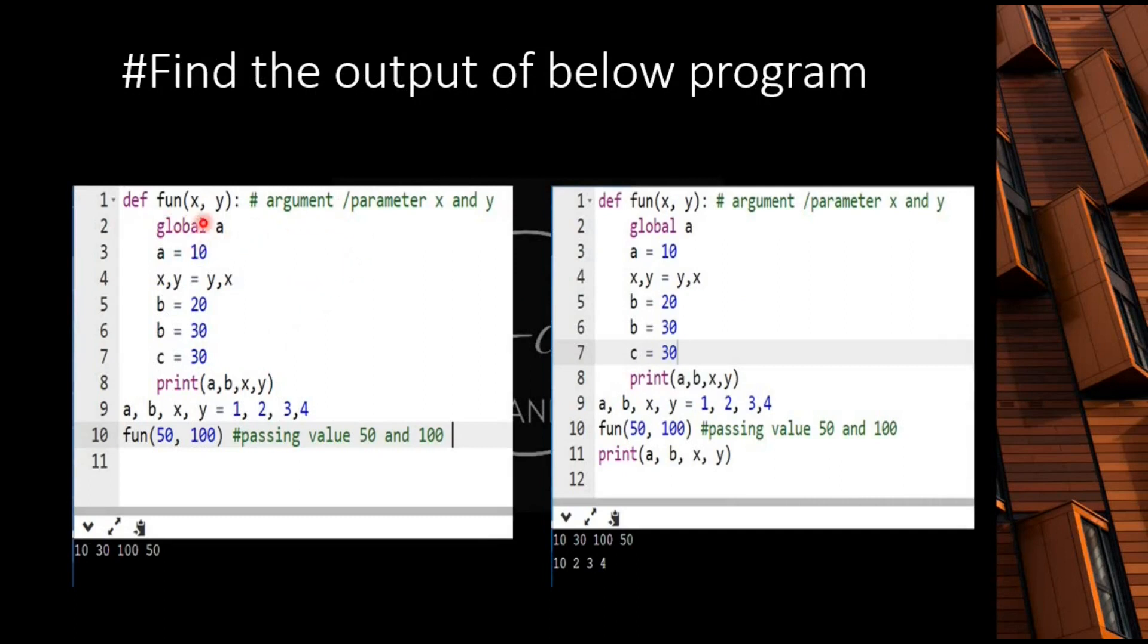So let's understand what these programs are telling. First of all, we have a function defined. This is the first step because we have seen variables in the function. So first we have a function defined with two arguments, x and y.